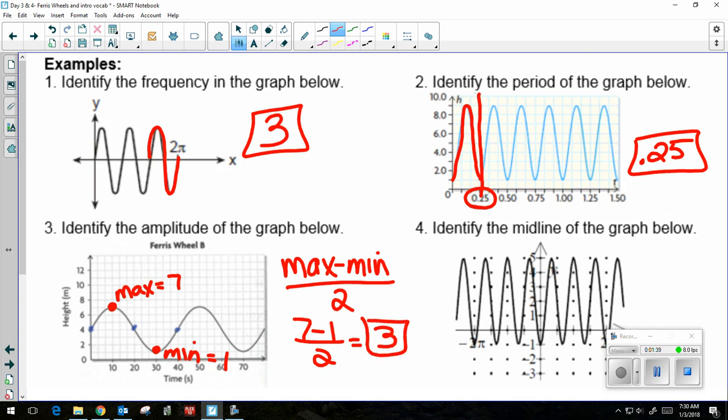The other way you can do it graphically is to find the midline. If you find the midline, the amplitude is this distance from here to there, which is 3. From the midline up to the max or from the midline down to the minimum.